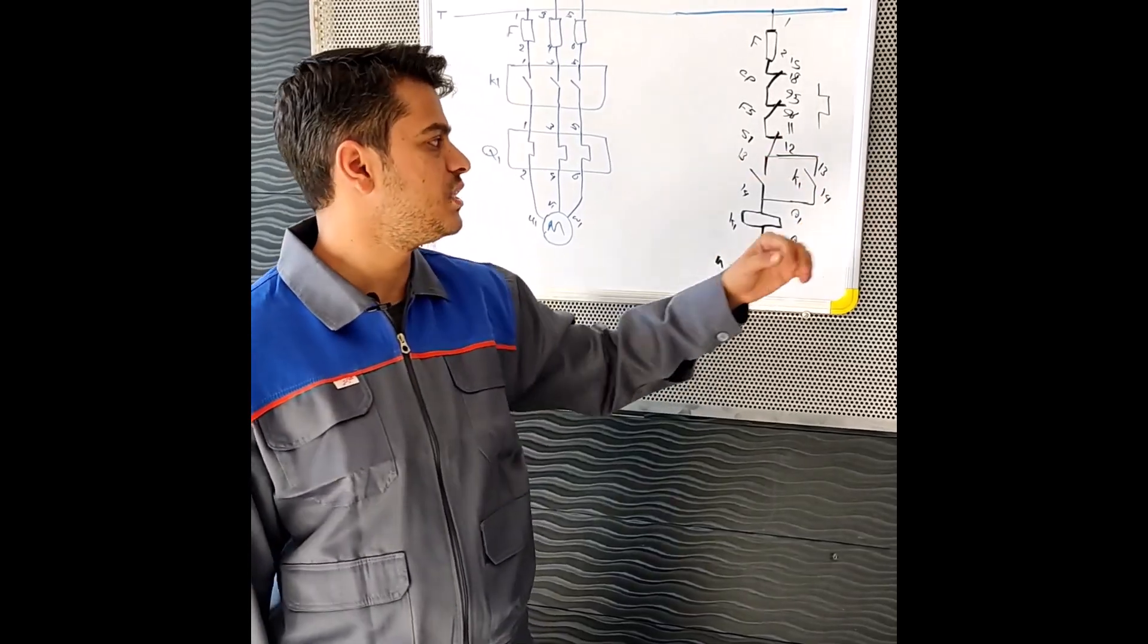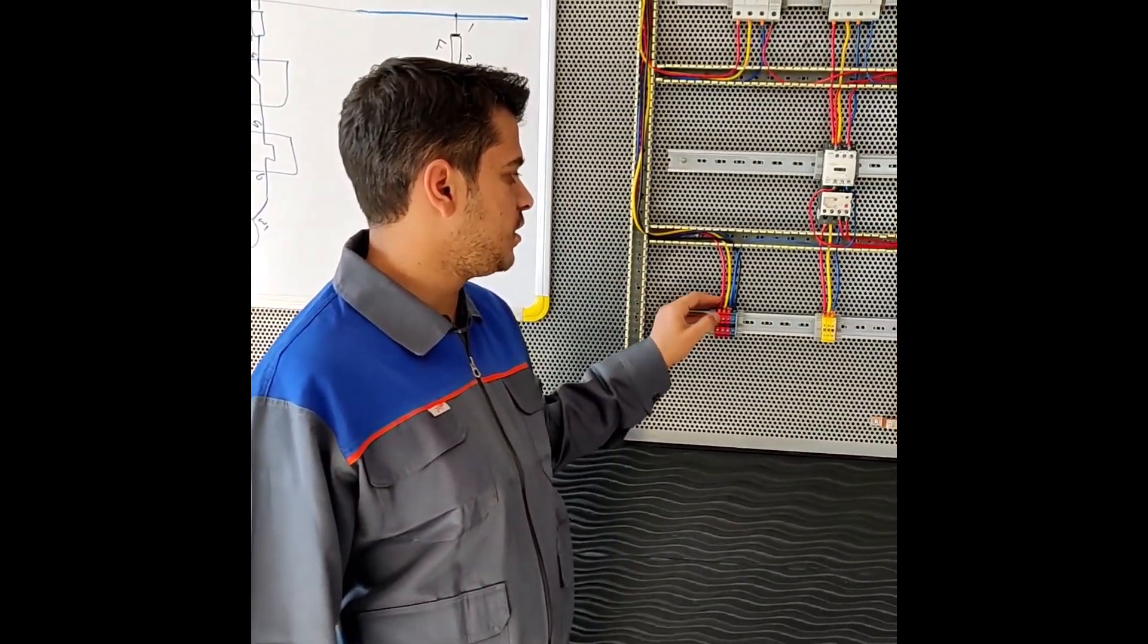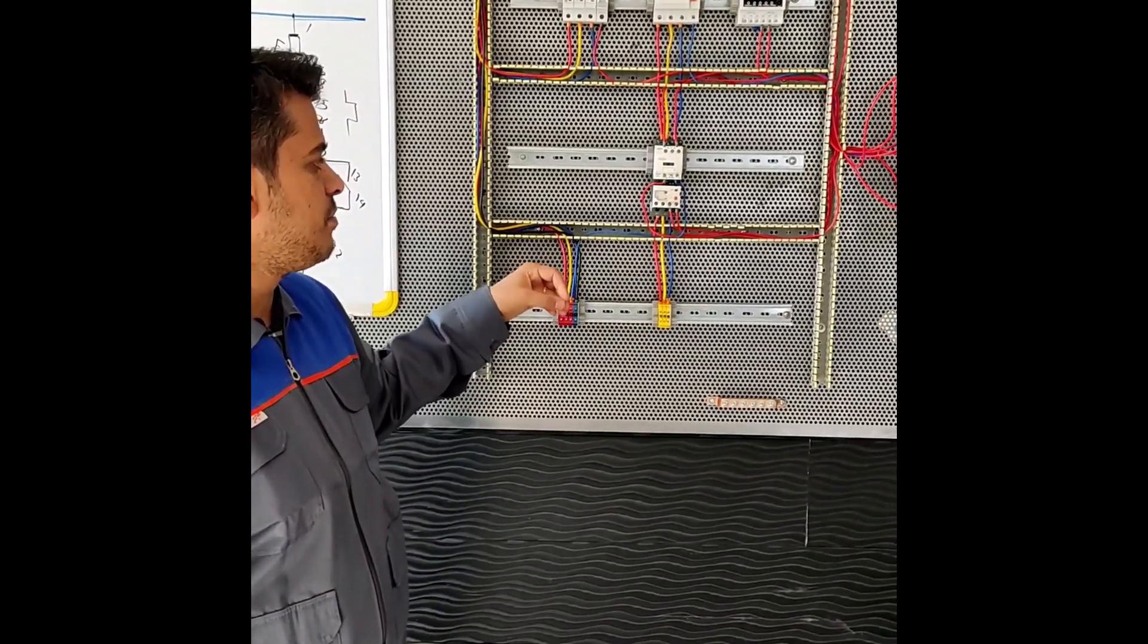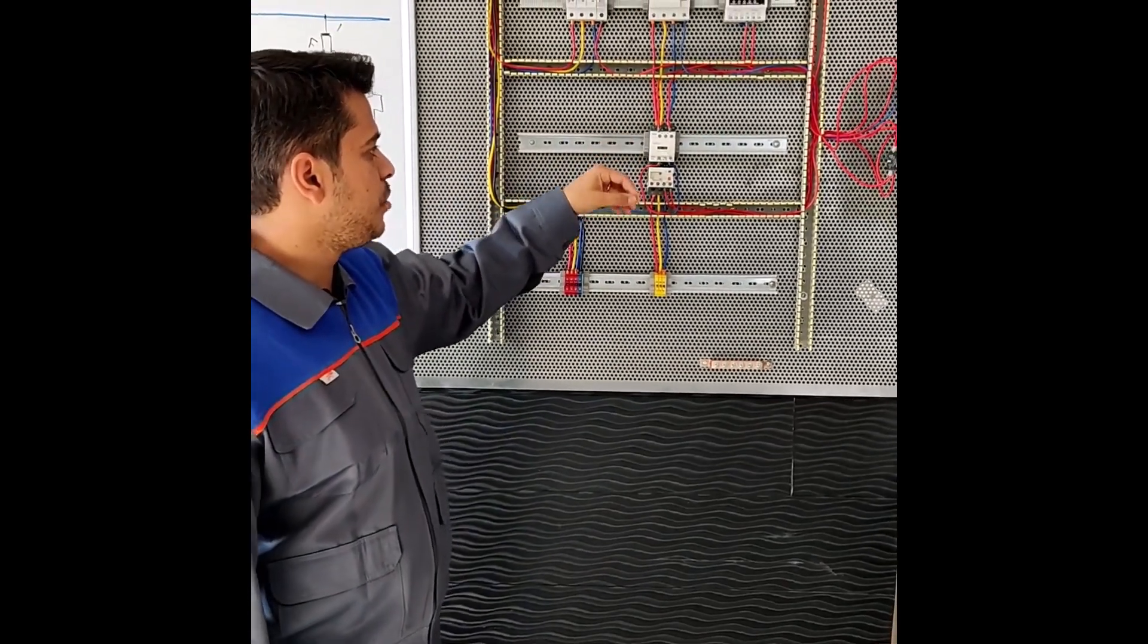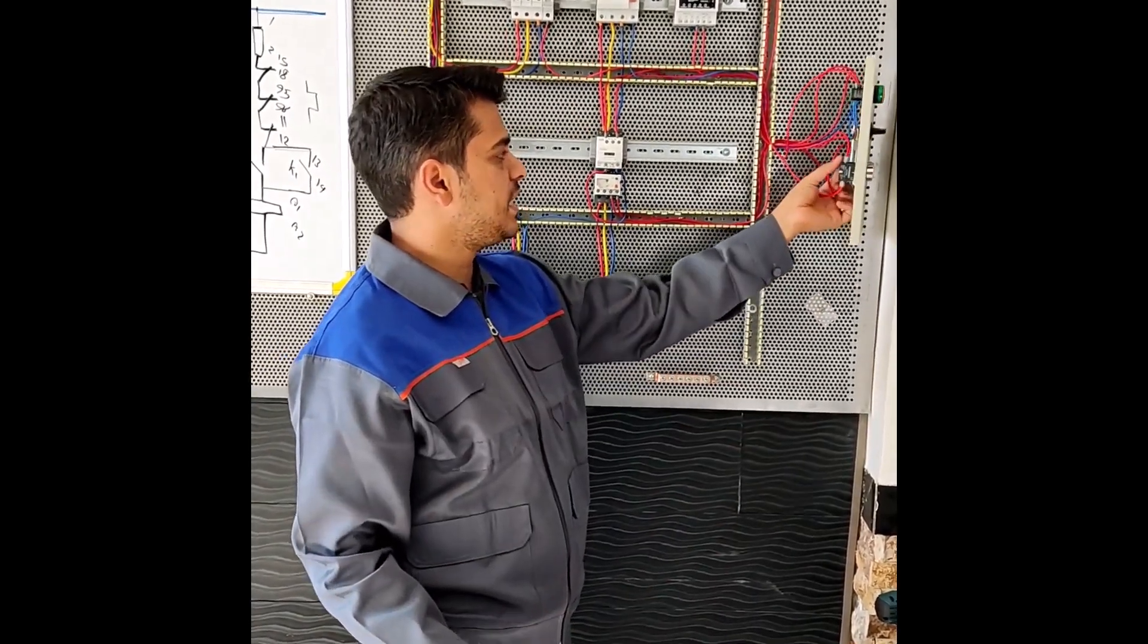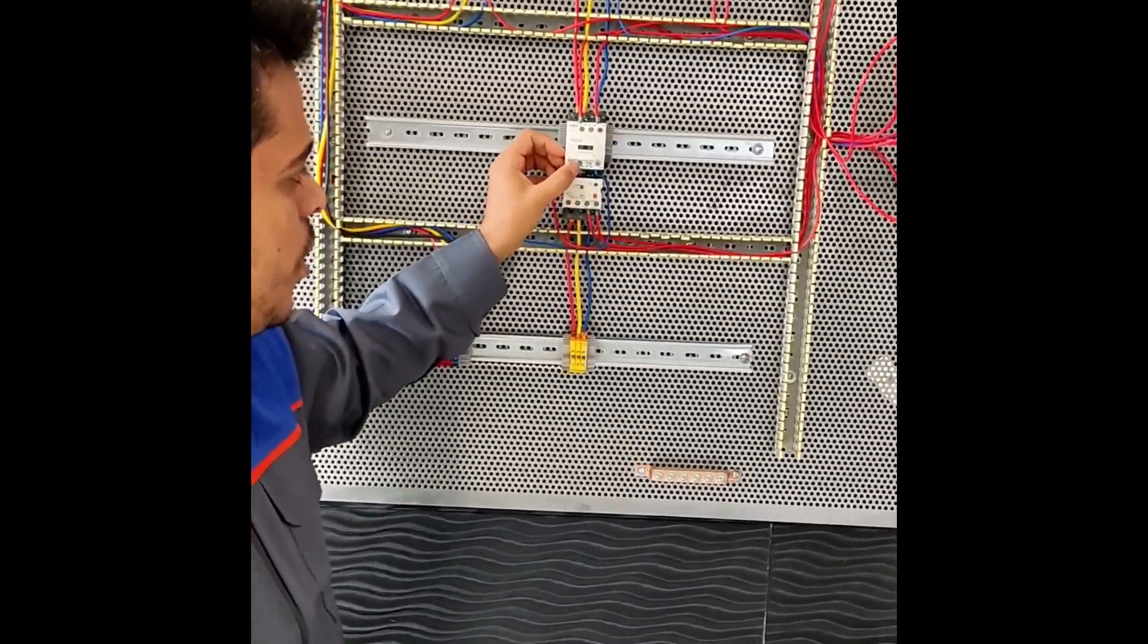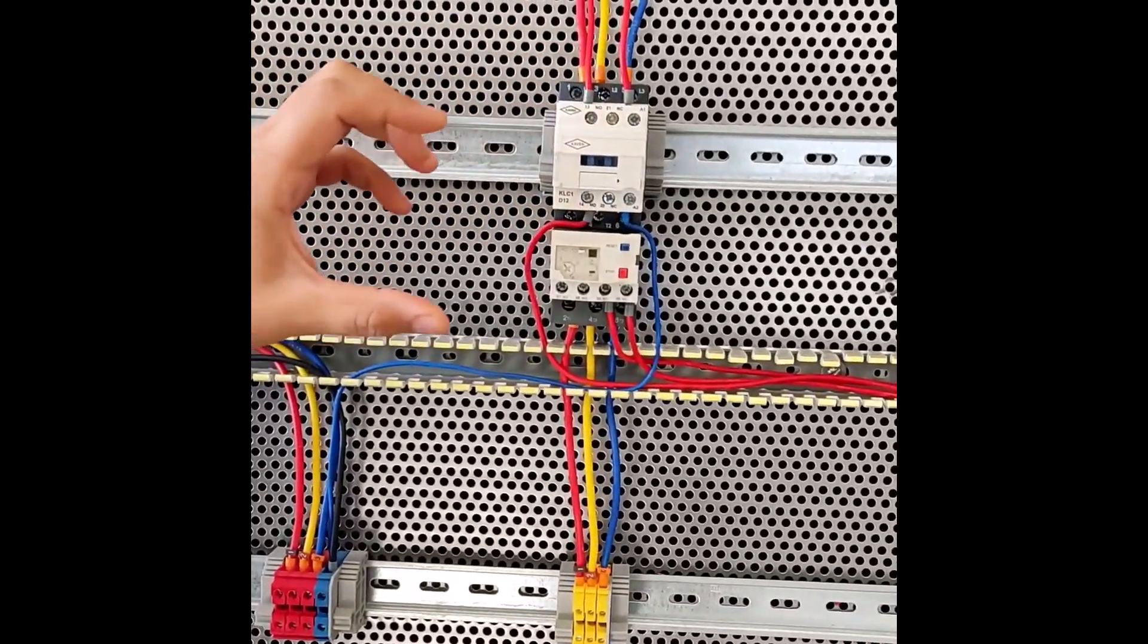If you want to start the engine permanently, you must connect 13 and 14 contactors with 13 and 14 start keys. We will show you the board now. We wired the power circuit with grade 4 wire, but we wired the command circuit with wire number 1. We connected 13 of the key to 13 contactors and 14 key to 14 contactors.